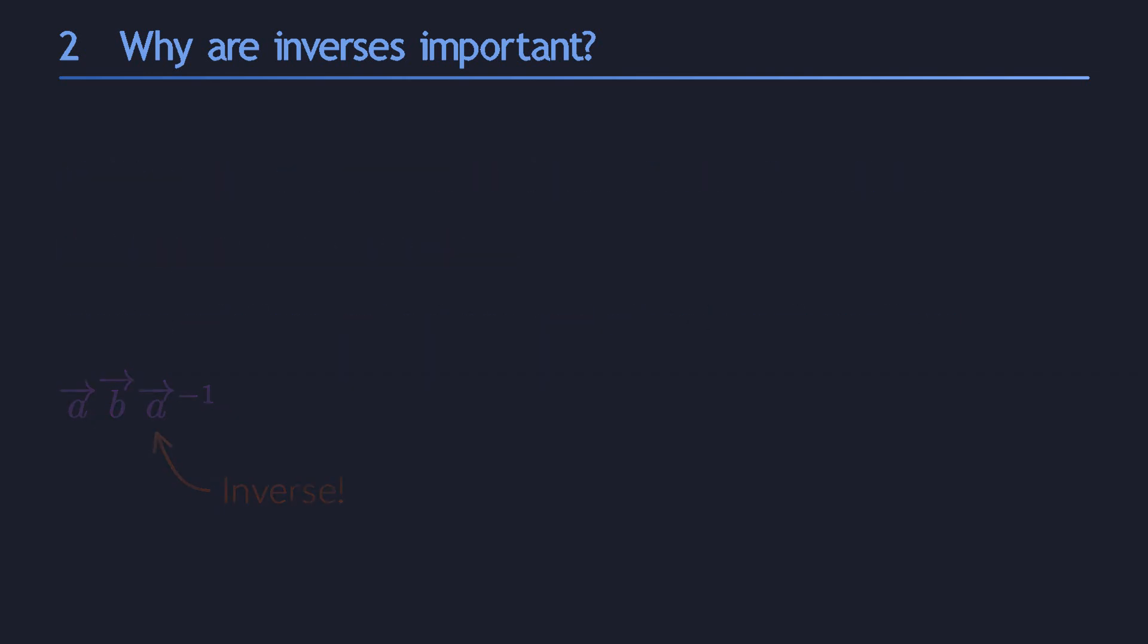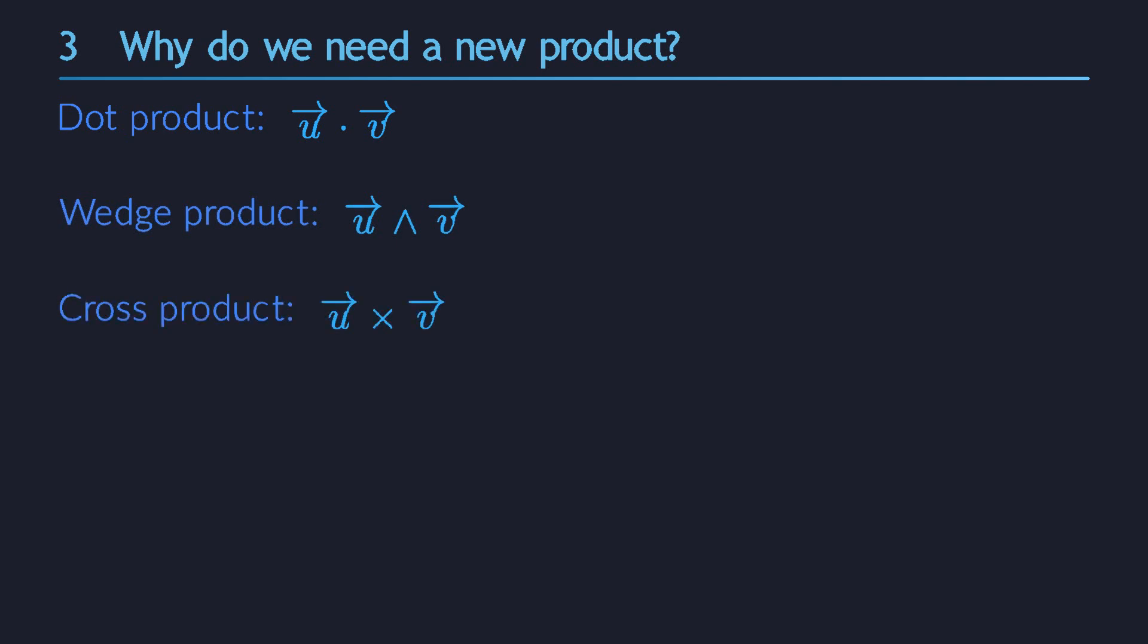We will spend a lot more time on it in the rest of the series. Ok, so inverses are important, but that doesn't mean that we necessarily have to invent a brand new product. Why can't we just use one of the products we already know? Such as the dot product or the wedge product or the cross product? What's wrong with those?